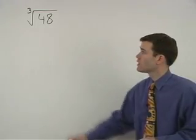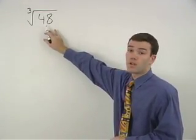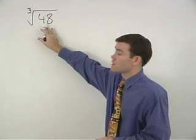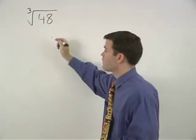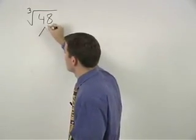To simplify a cube root where the number inside the radical is not a perfect cube, again we start by making a factor tree for the number inside.